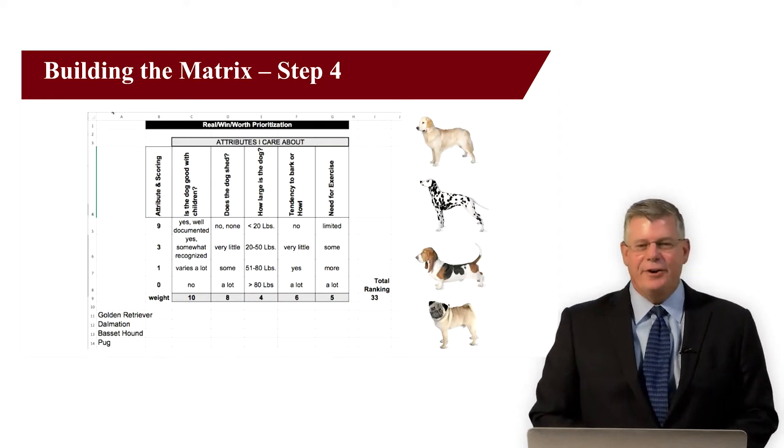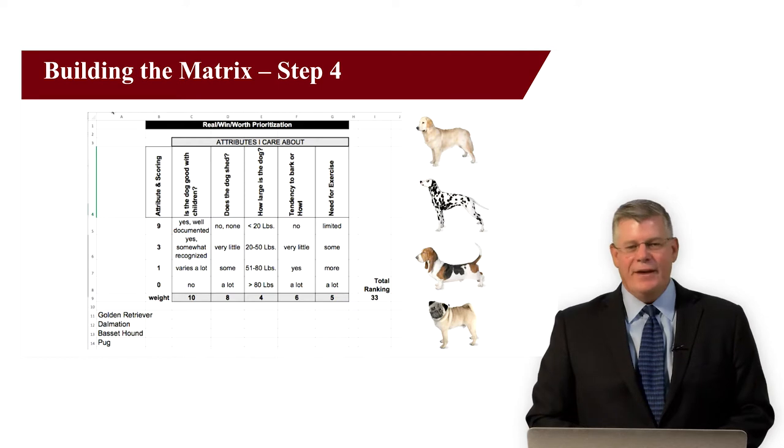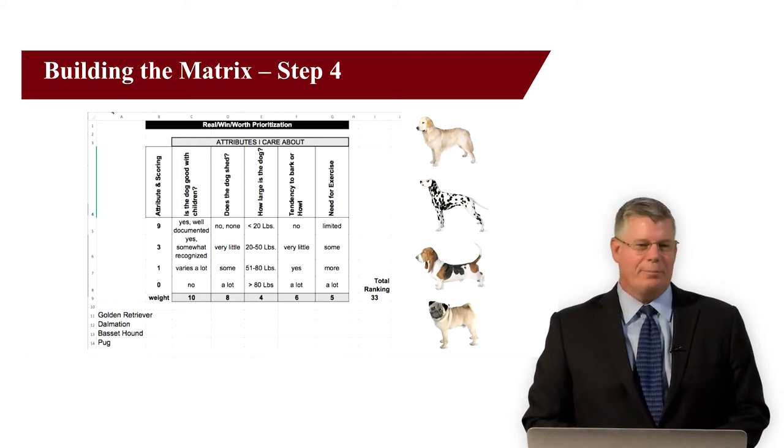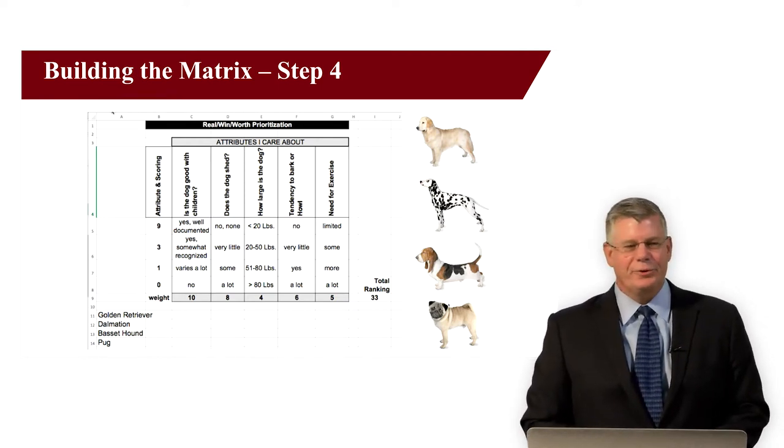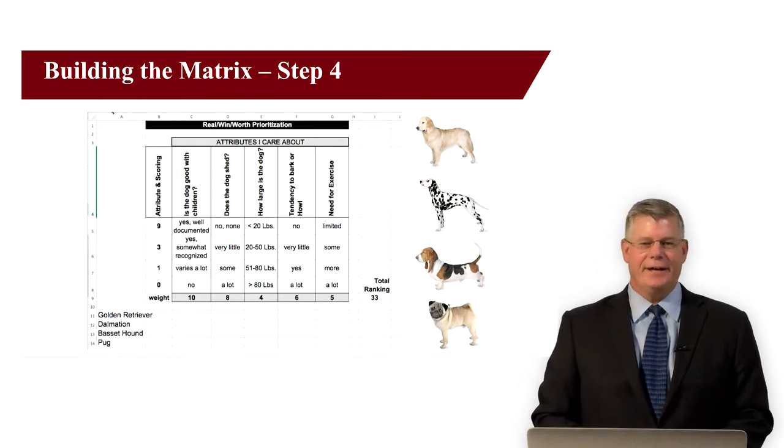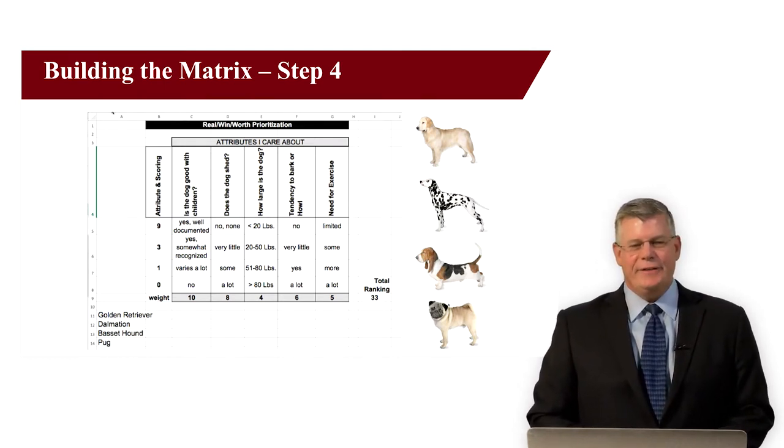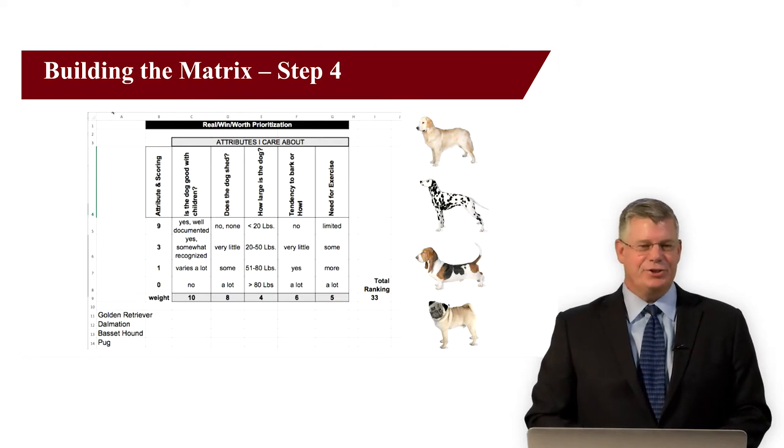Now, the fun part. Here's where you list your options. In the real world, we used about 20 dog breeds. For simplicity here, I'll use a Golden Retriever, a Dalmatian, a Basset, and a Pug. We add each to the x-axis, or column A, in the spreadsheet.